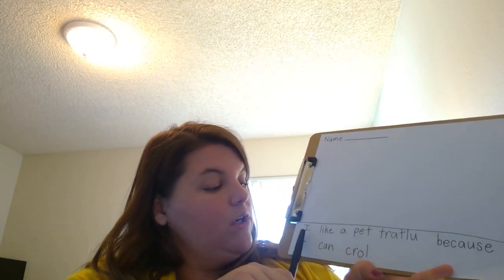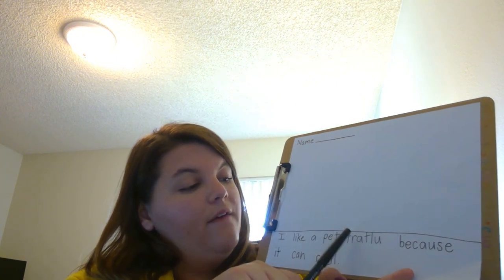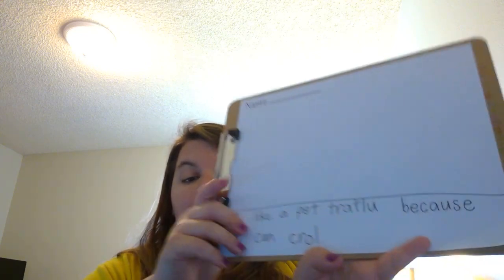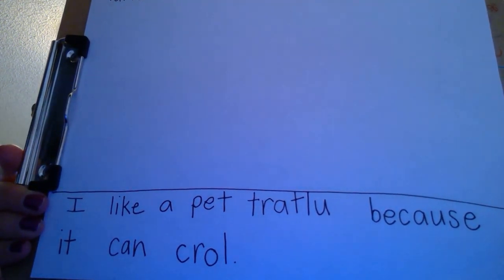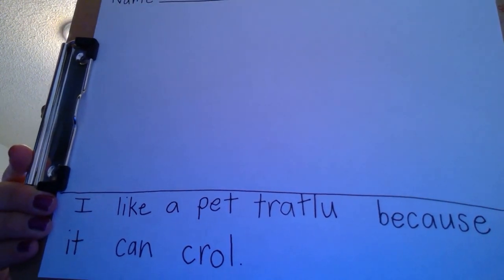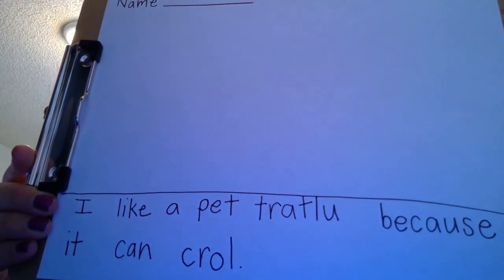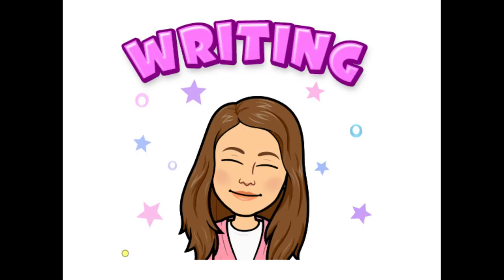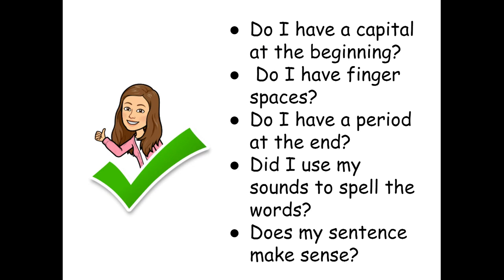I'm going to make sure it has all nine words that I said at the beginning: one, two, three, four, five, six, seven, eight, nine — I have all nine words: 'I like a pet tarantula because it can crawl.' I just did my best job sounding out my words. Now that we've completed our writing, we need to check our writing. Do I have a capital at the beginning? Do I have finger spaces? Do I have a period at the end? Did I use my sounds to spell the words? Does my sentence make sense? If you have all those things, great job — give yourself a big thumbs up.